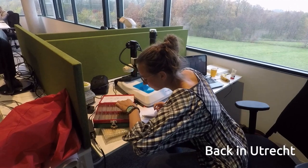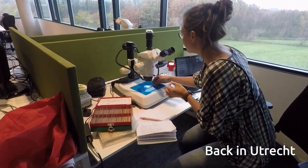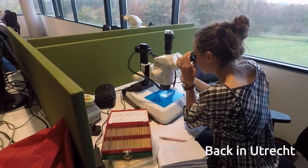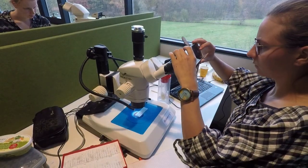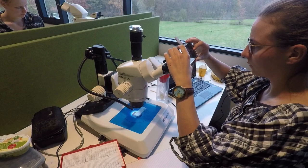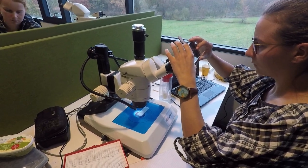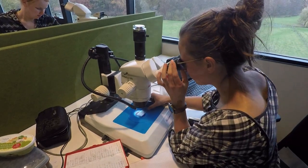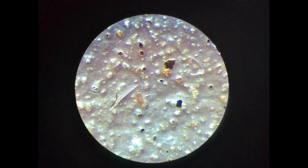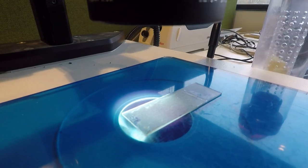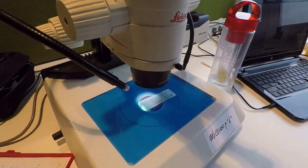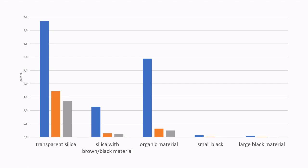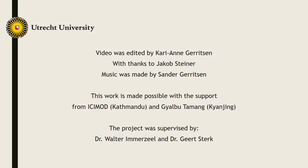Back in Utrecht, the collected samples on the glass slides were analyzed under the microscope. We made 10 pictures of each sample. The materials on the pictures were identified to determine the composition of the light-absorbing particles in the field. Black carbon was also measured, however in very low concentrations compared to the other materials.